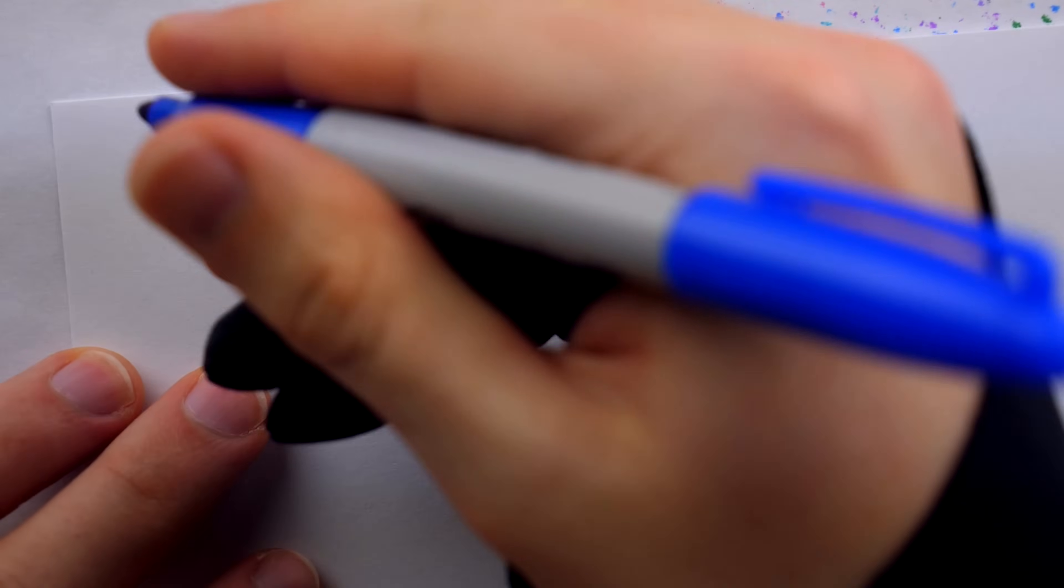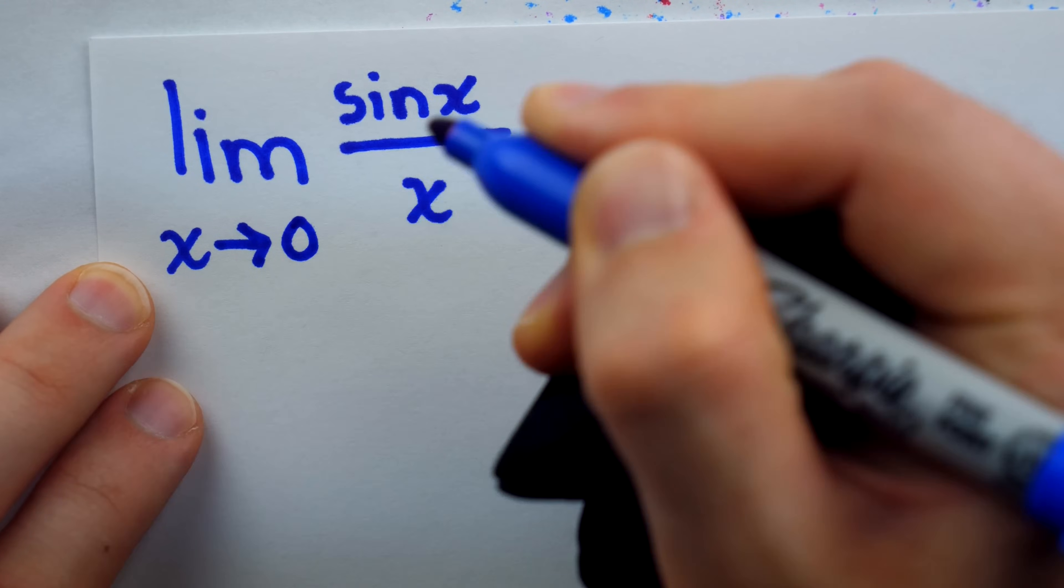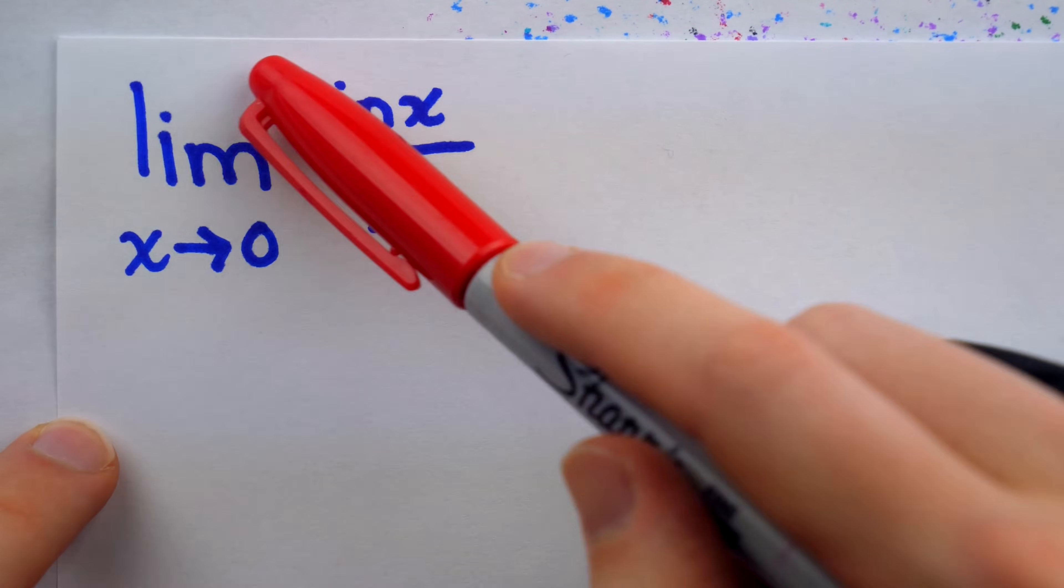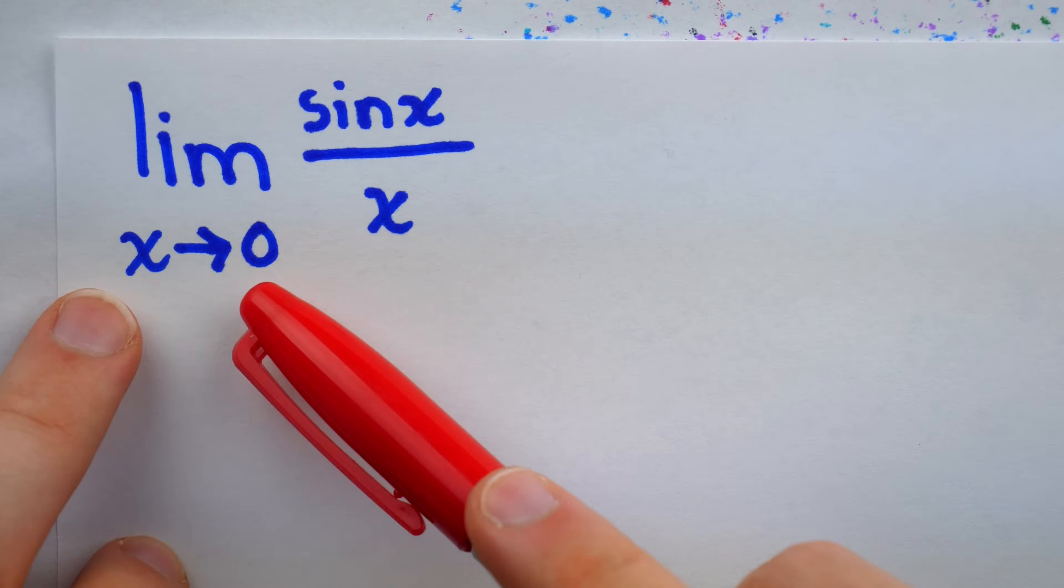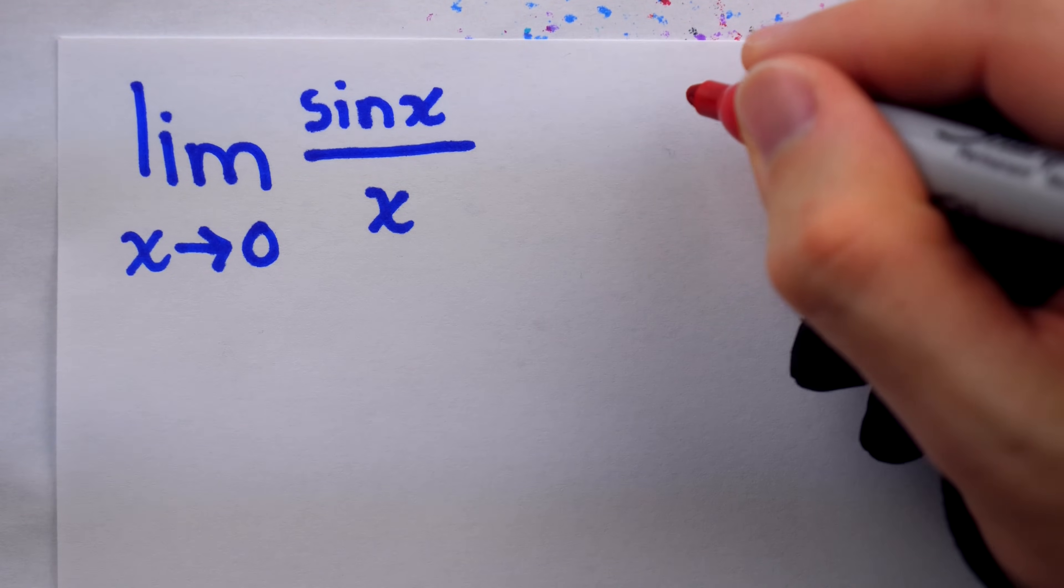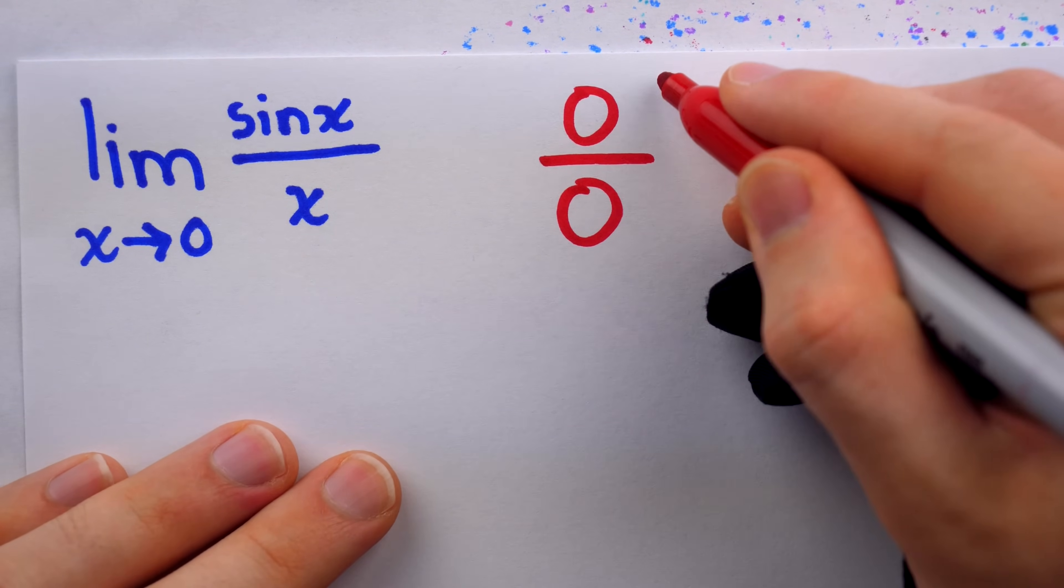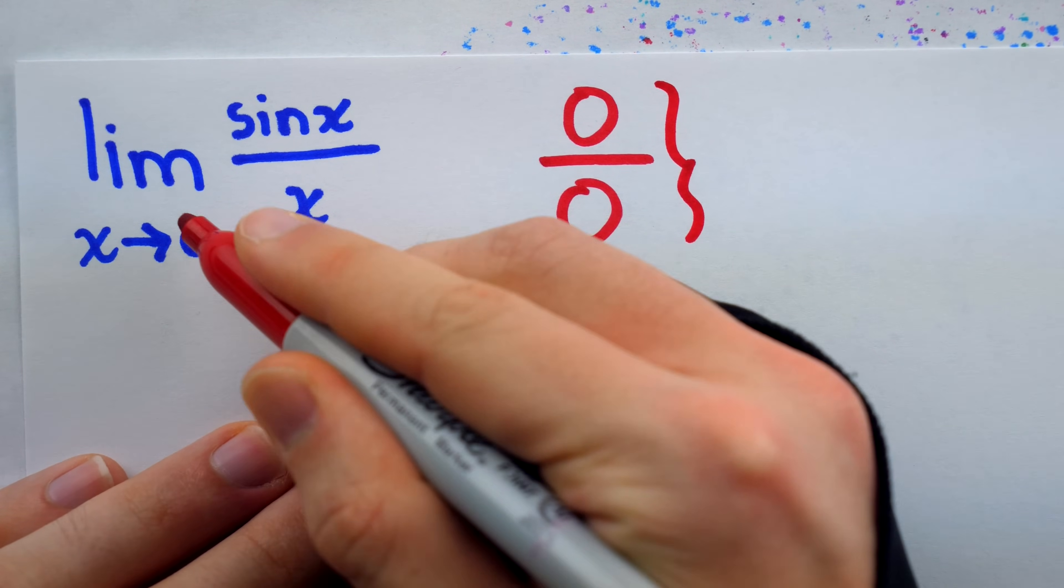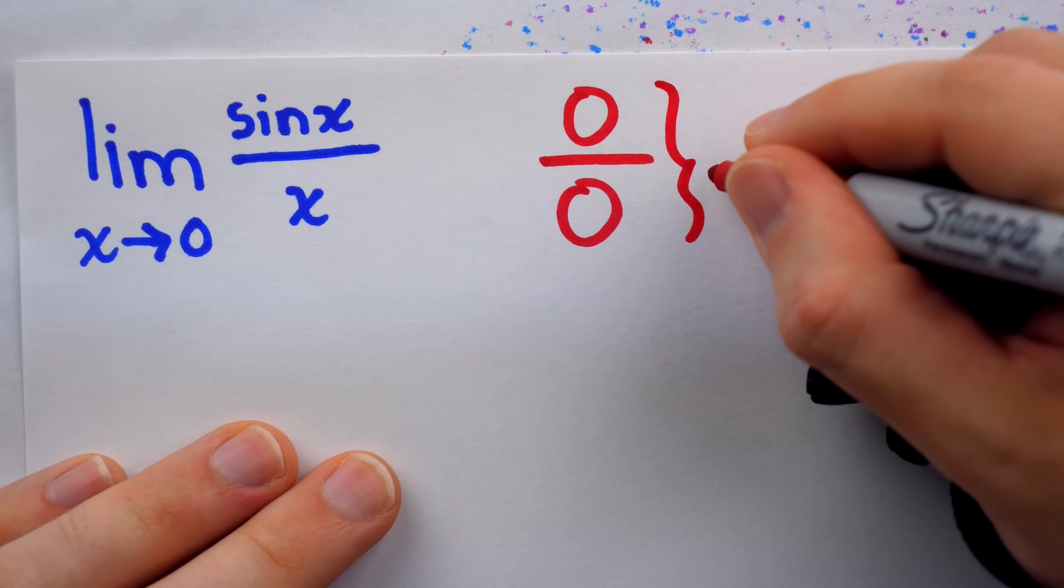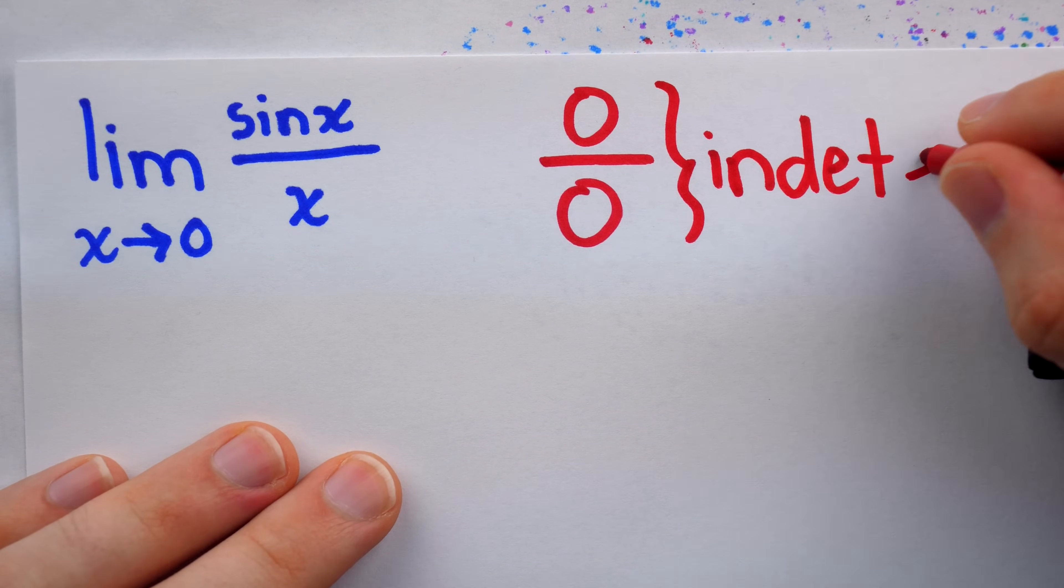When you take calculus, you will often encounter the limit of sine x over x as x approaches zero. And this is what we call an indeterminate form, because if we just tried to plug zero in for x, we would get sine of zero, which is zero, over x, which we're saying is zero. And if this is what you get when you try to substitute in the value that's being approached, then the limit could actually be anything. This is indeterminate, because we can't determine the value of the limit from something like this.